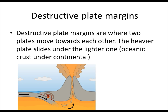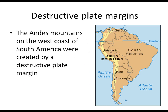The second type of plate margin is a destructive plate margin. These are where the plates move together and one plate slides under the other — the heavier plate sliding underneath the lighter one. In most cases, this is oceanic crust sliding underneath continental. As you can see from this diagram, there's lots of friction illustrated by the red lines, and the oceanic plate melts. This extra molten rock in the mantle then bursts out to the surface in the form of volcanoes. An example of this destructive plate margin is the Andes Mountains on the west coast of South America.